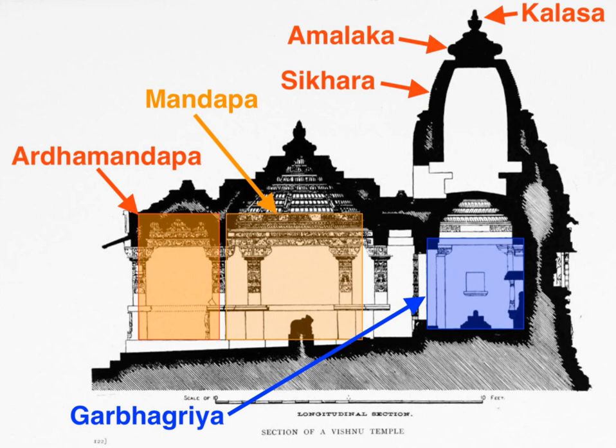The circle of the Mandala circumscribes the square. The square is considered divine for its perfection and as a symbolic product of knowledge and human thought, while the circle is considered earthly and human, observed in everyday life — each supports the other. The square is divided into perfect square grids; in large temples this is often an 8×8 or 64-grid structure, and in ceremonial temple superstructures an 81-sub-square grid. The squares are called padas, with Vedic origins from the fire altar. The alignment along cardinal directions is likewise an extension of Vedic rituals of three fires.